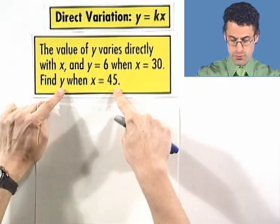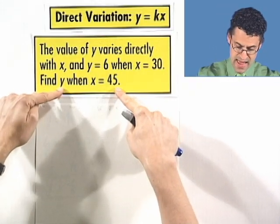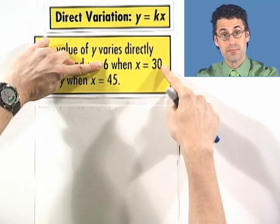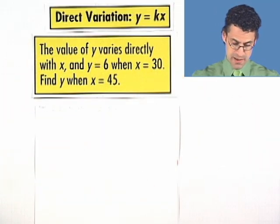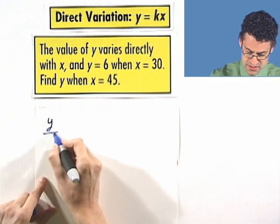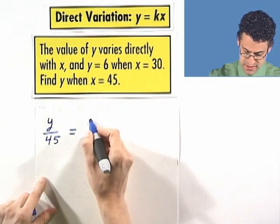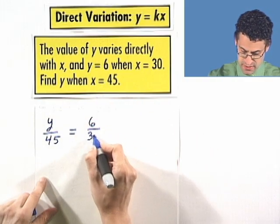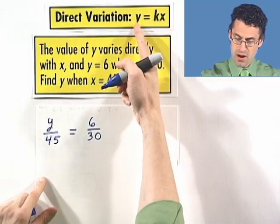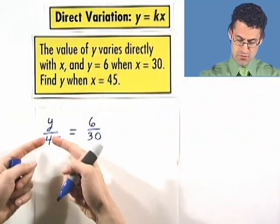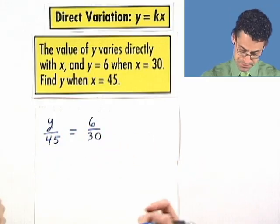One way is to set up two ratios equal to each other and produce a proportion. Since they vary directly, then you could say this: y is to 45 as 6 is to 30. Those two ratios will be the same. So we set up a proportion, y is to 45 as 6 is to 30. Why? Because that k should be the same. Y over x should equal y over x.